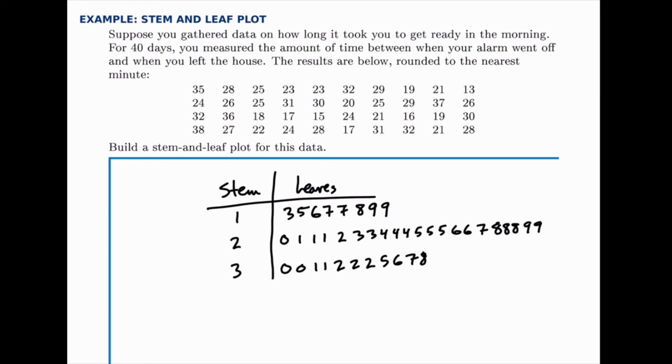Now that we have all the stems and leaves written, notice how it looks. It looks almost like a histogram or a bar chart turned sideways, where the length of each string of leaves represents the frequency of that category. So it divides it into categories by tens, and we can see that the most frequent category is the range from 20 minutes to 29 minutes.